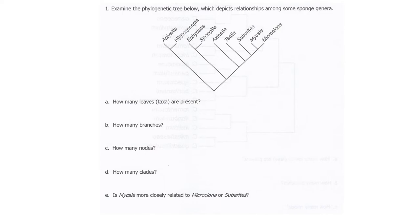So for the answers, how many taxa were present? There were nine. Again, those are the names at the top. How many branches are there? 16. So internodes as well as branches, even these guys up here. So you should be able to count 16 from there.